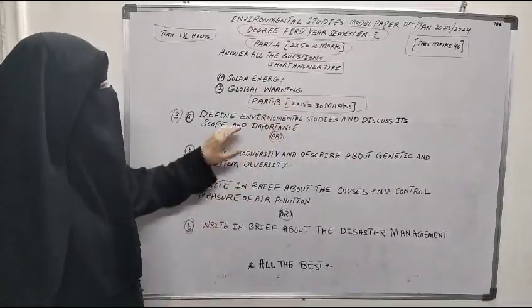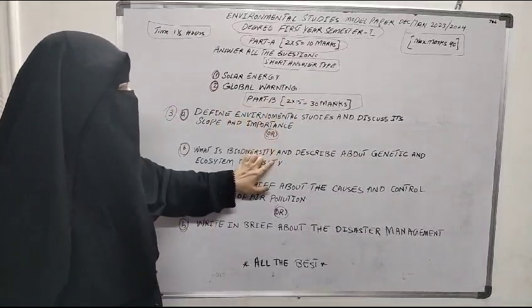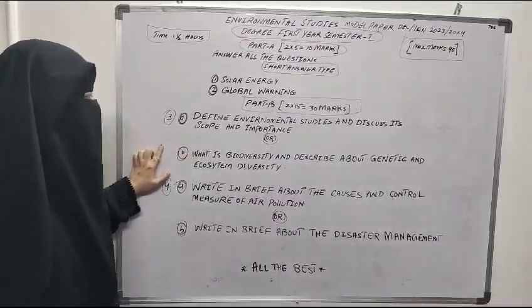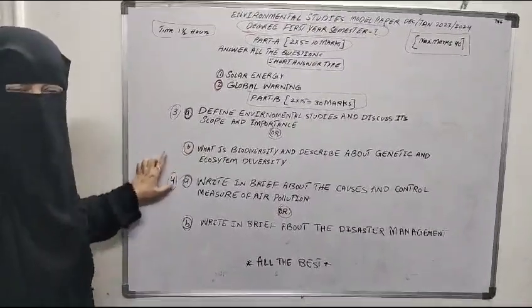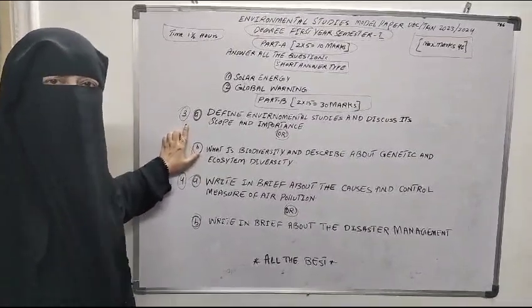Now come to part B. Here you have to write two questions. Here you have two units. From these two units you have to write one question from each unit. In each unit you have two questions. You can attempt any one from each unit.